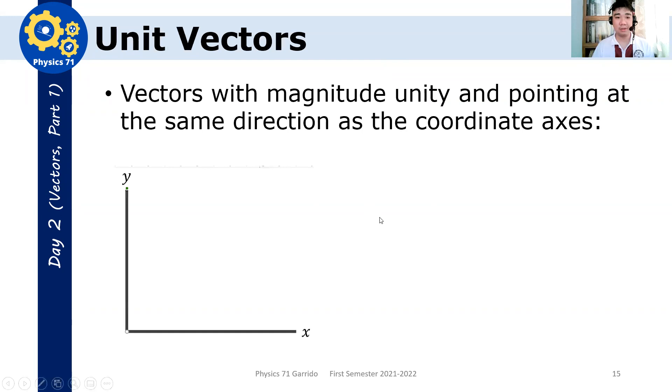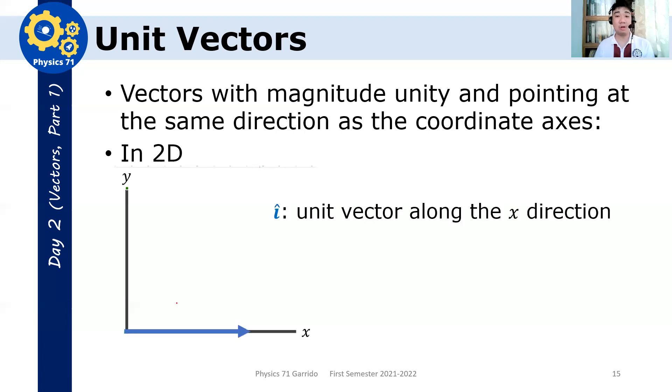There's this thing called unit vectors, or unit vectors are vectors with magnitude unity and pointing at the same direction as the coordinate axes. For example, in 2D, you can define two unit vectors there. One that is pointing in the x direction, which is the so-called i-hat, and one that is in the y direction, your so-called j-hat. So i-hat is the unit vector along the x direction, and j-hat is the unit vector along the y direction.